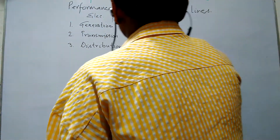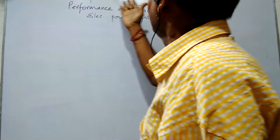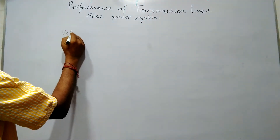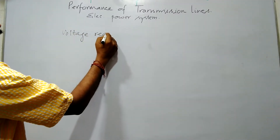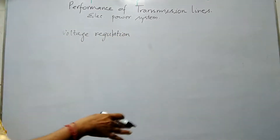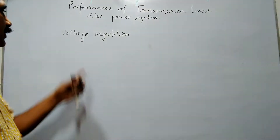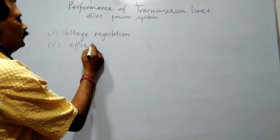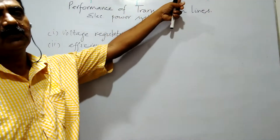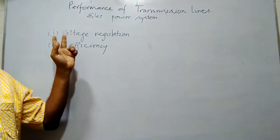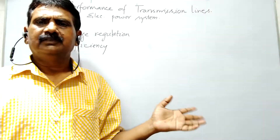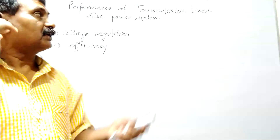Now, we are related with the chapter whose name is Performance of Transmission. Performance means voltage regulation. What is your voltage regulation? There is a lot of fluctuation. Voltage regulation is the first thing. The second thing is efficiency. When we talk about the performance of a transmission line, it means we are interested in determining the value of voltage regulation and efficiency.